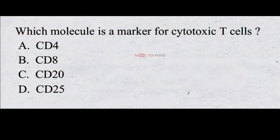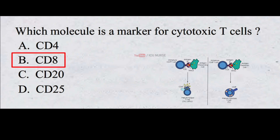Which molecule is a marker for cytotoxic T cells? A. CD4 B. CD8 C. CD20 D. CD25. The correct answer is B. CD8. CD8 is a glycoprotein found on the surface of cytotoxic T cells and is a marker for these cells.